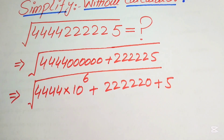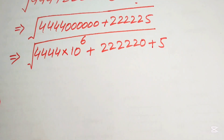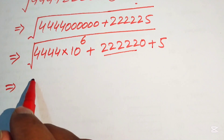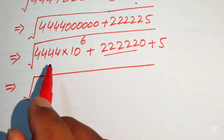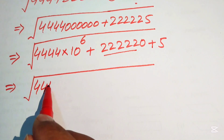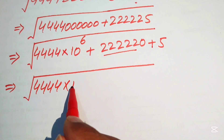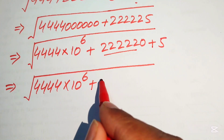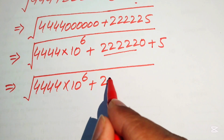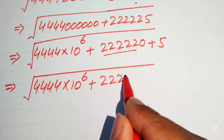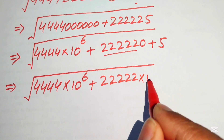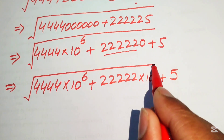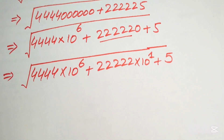We rewrite further in scientific notation: 4444 multiplied by 10 raised to power 6, plus 222222 (that is 2 repeated 6 times) multiplied by 10 raised to power 1, plus 5.